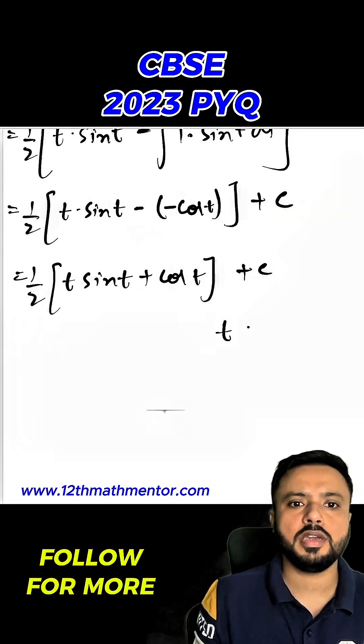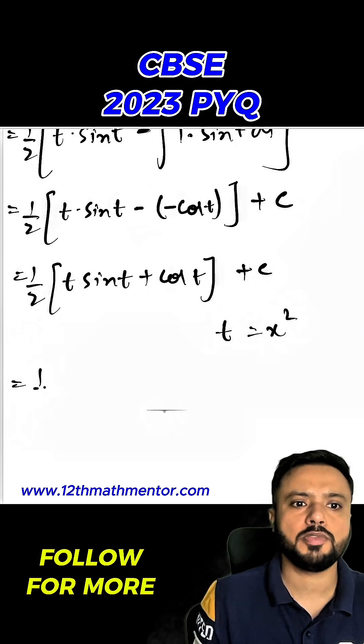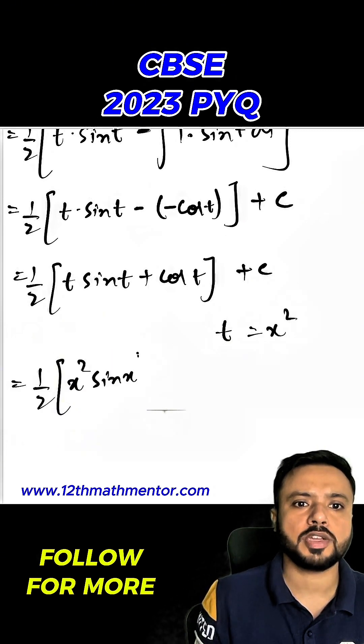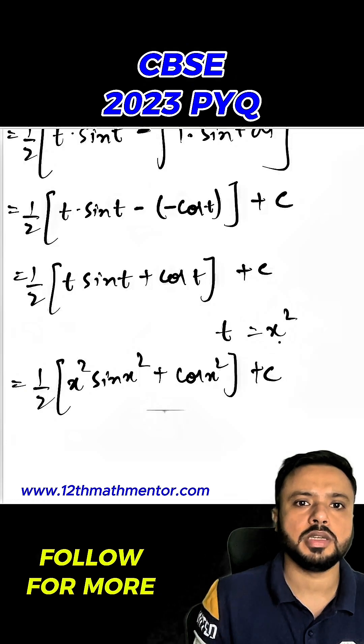Now we will substitute the value of t which was x². So my final answer would be 1/2 times x² times sin x² plus cos x² plus c. So this is my final answer.